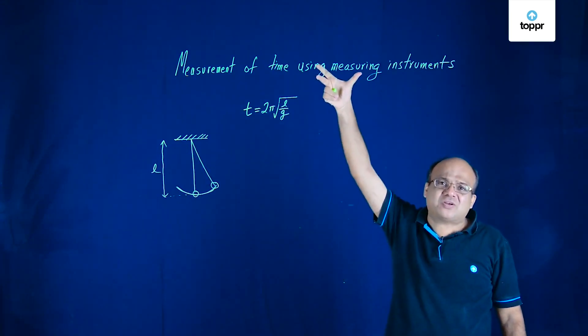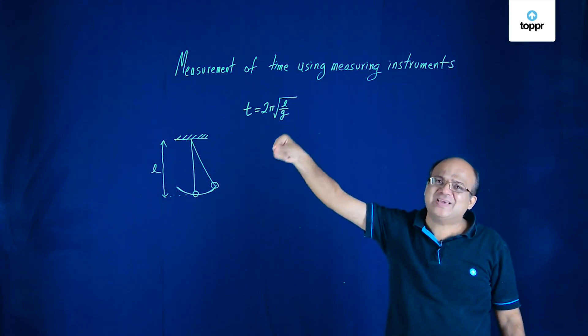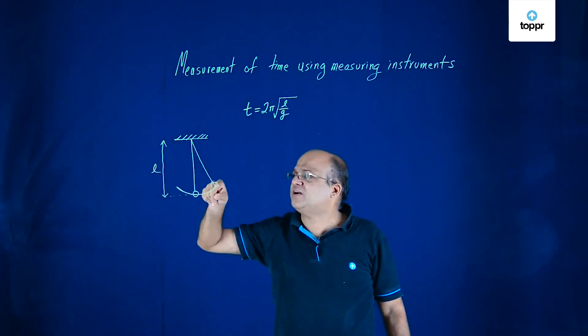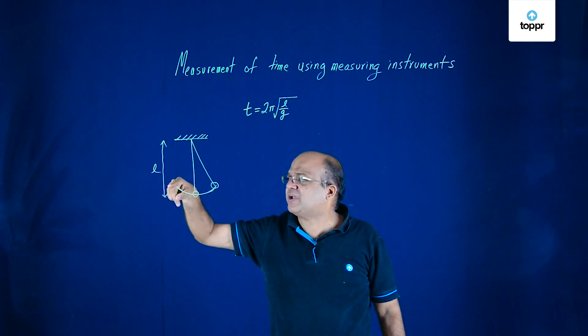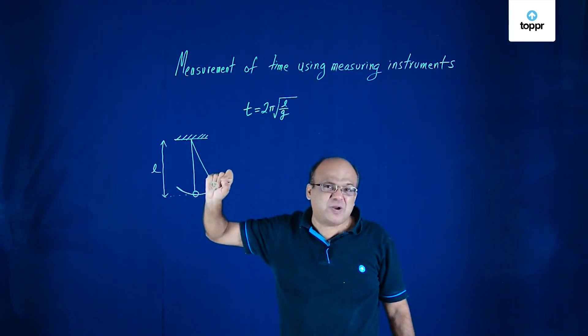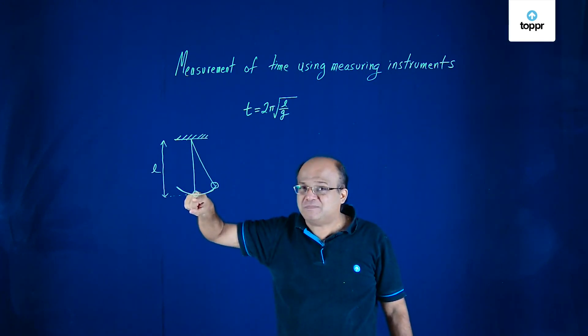In olden days we had grandfather clocks, those big clocks with pendulum. Those pendulums used to have a time period of two seconds. Like it starts from here, comes back in one second and again goes back in one second. Time period is two seconds. That is called seconds pendulum. The length of a seconds pendulum is approximately one meter.